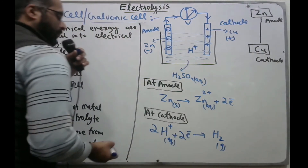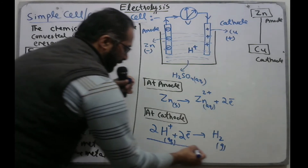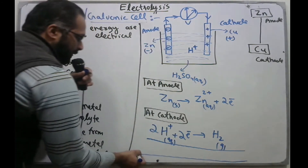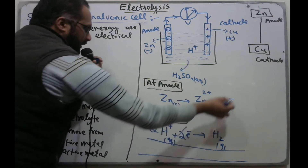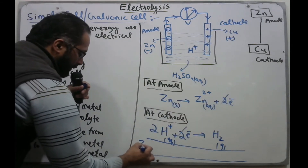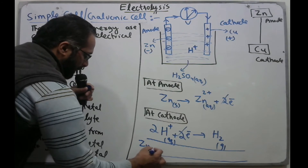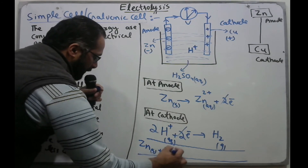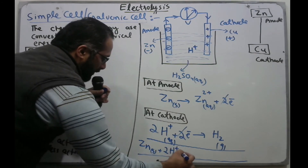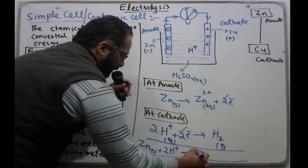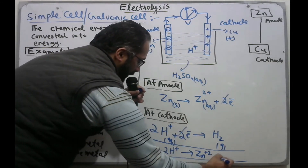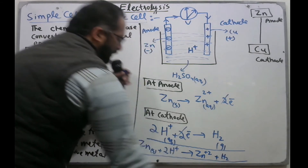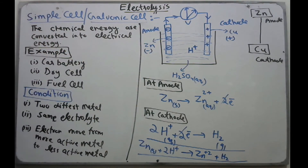To get the overall reaction, we add the two half-reactions. The electrons cancel out, giving: Zn(s) + 2H⁺(aq) → Zn²⁺(aq) + H₂(g). This is the redox reaction that proceeds during the electrochemical process.